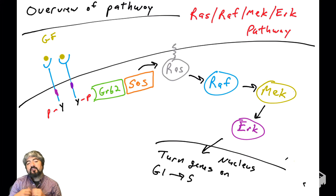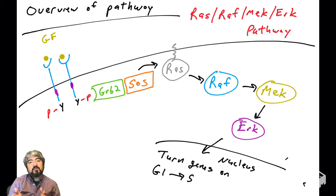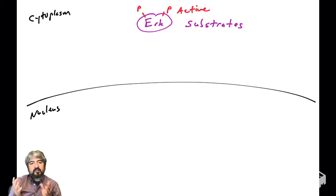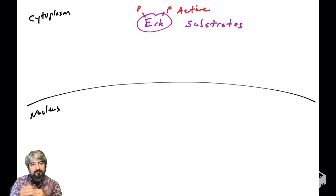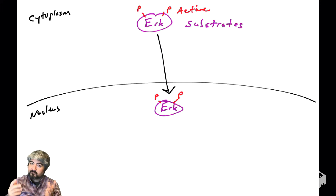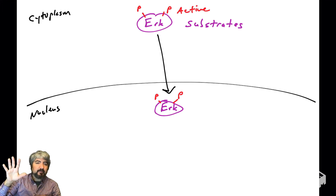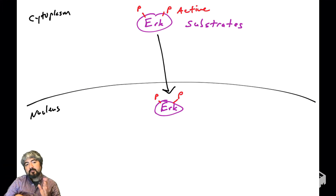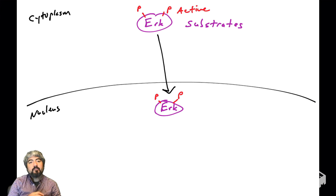ERK is a kinase that can phosphorylate over 100 different proteins, many of which turn on genes that push the cell into S phase. ERK can be in the cytoplasm or in the nucleus, so some percentage can be cytoplasmic and some percentage can be nuclear. ERK can phosphorylate substrates in both locations.